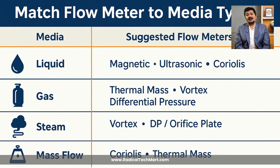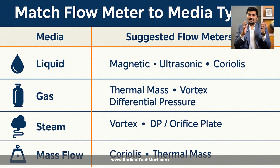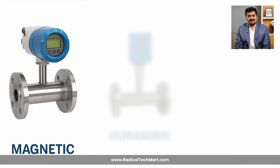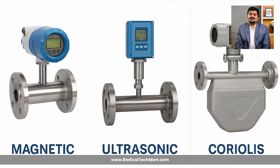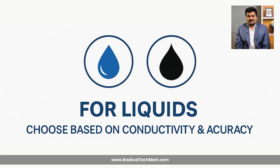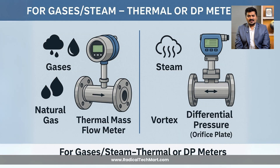The first thing you need to understand is your media — what exactly are you measuring. For liquids, consider magnetic, ultrasonic, or Coriolis flow meters depending on whether the liquid is conductive and how accurate your readings need to be. For gases, your options include thermal mass, vortex, or differential pressure flow meters.